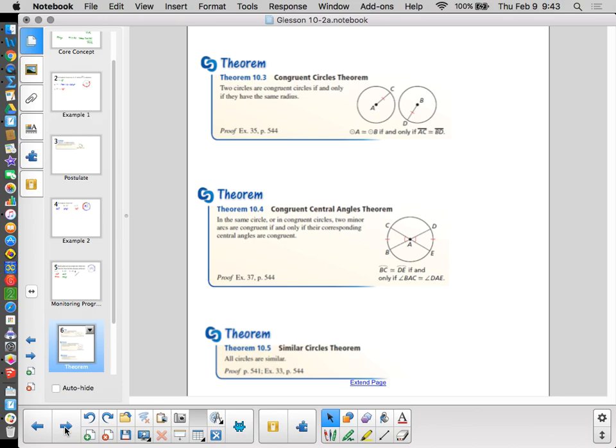Which leads us to congruent central angles and congruent arcs. Central angles and arcs are congruent only if they have the same measure in congruent circles.